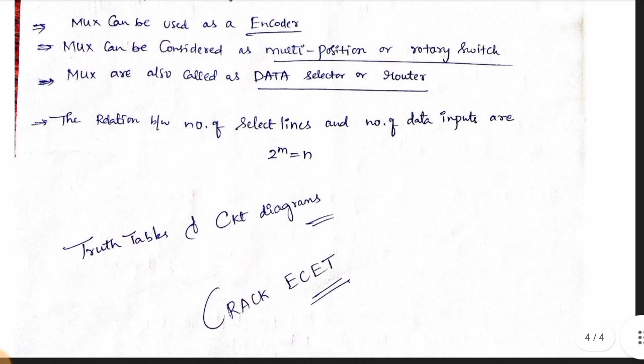The main thing is to use truth tables and circuit diagrams. For example, a 16-to-1 mux has 16 input lines and 1 output line. Since 2 to the power of 4 equals 16, there are 4 selection lines.